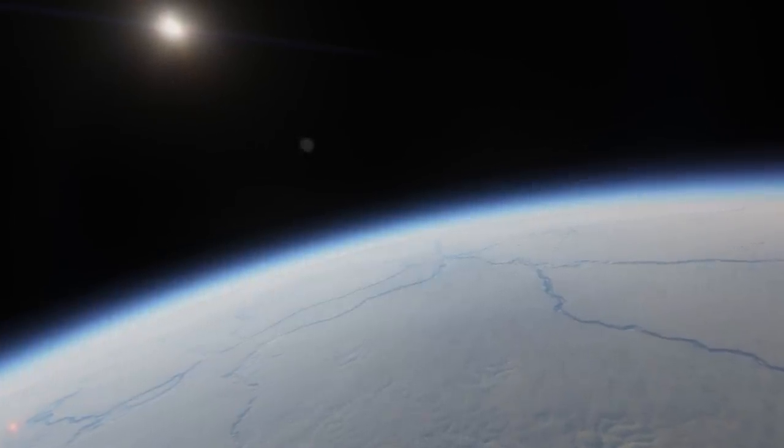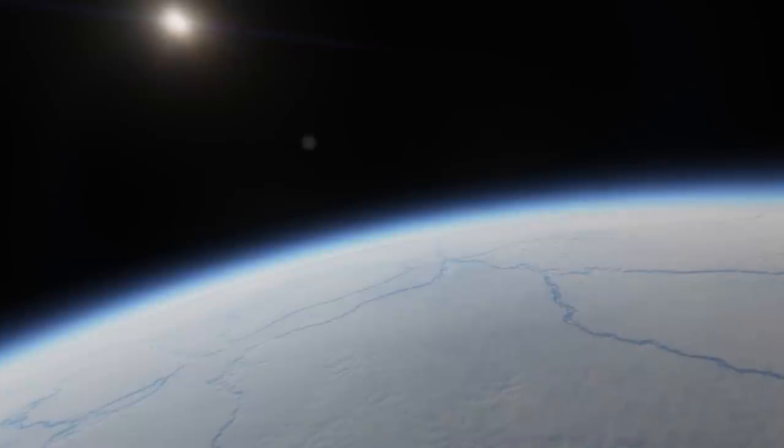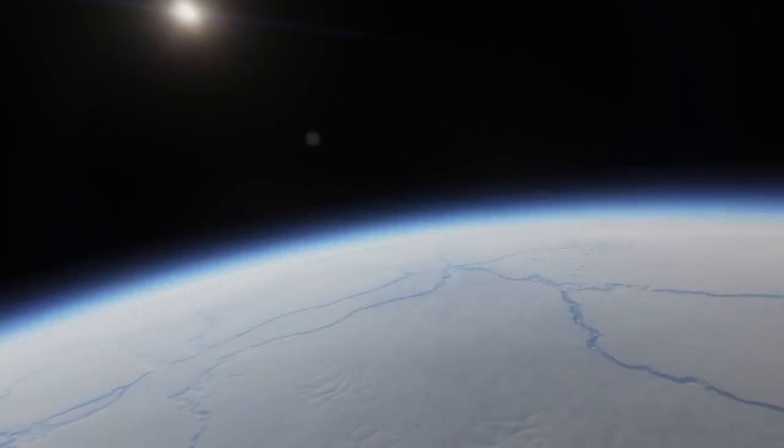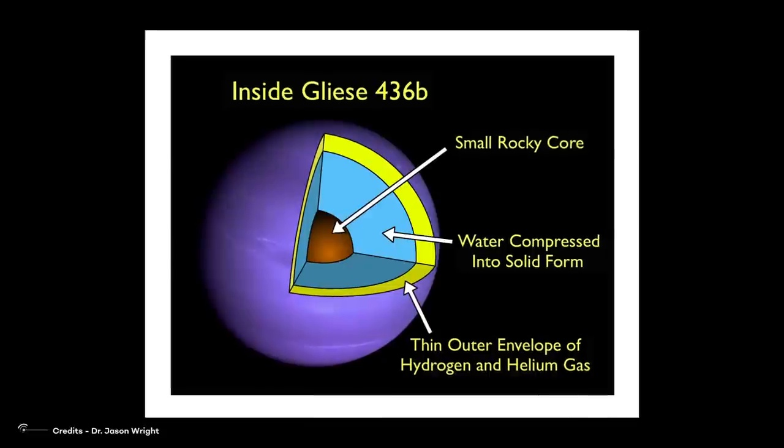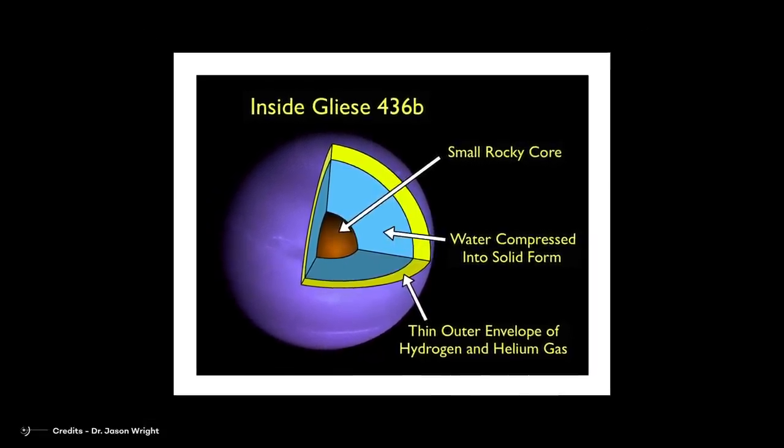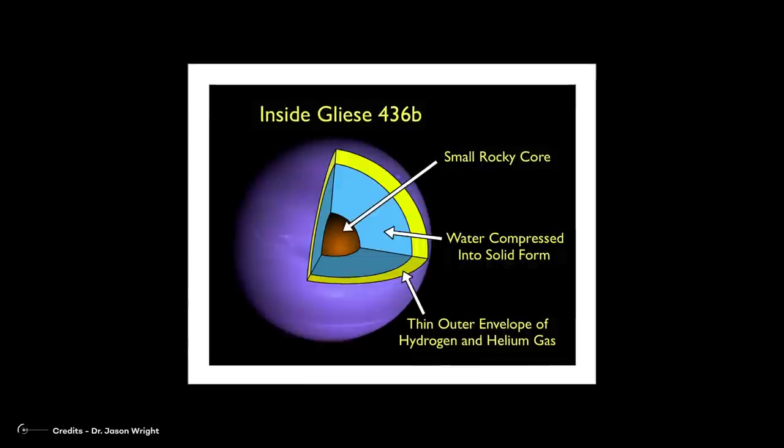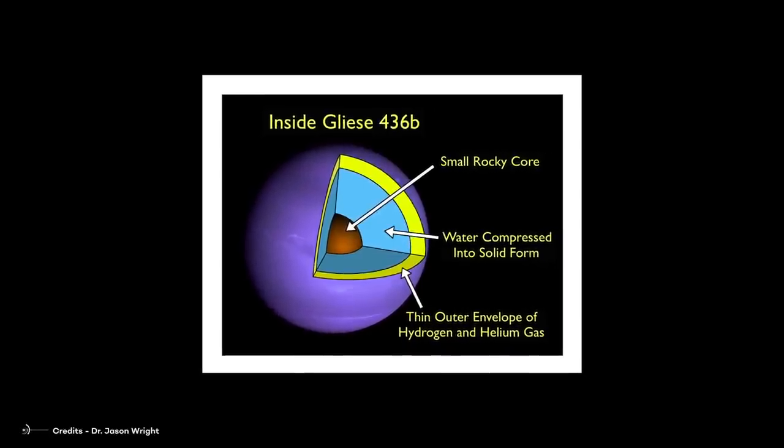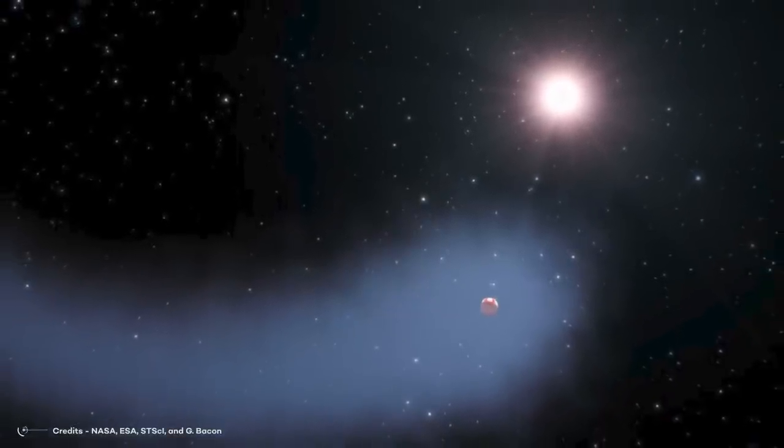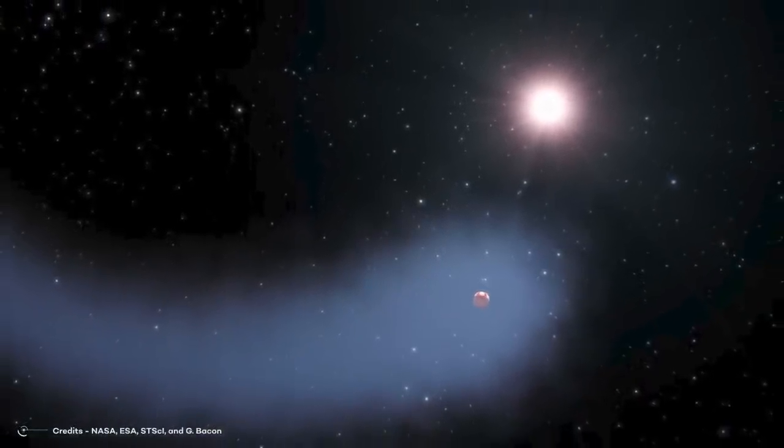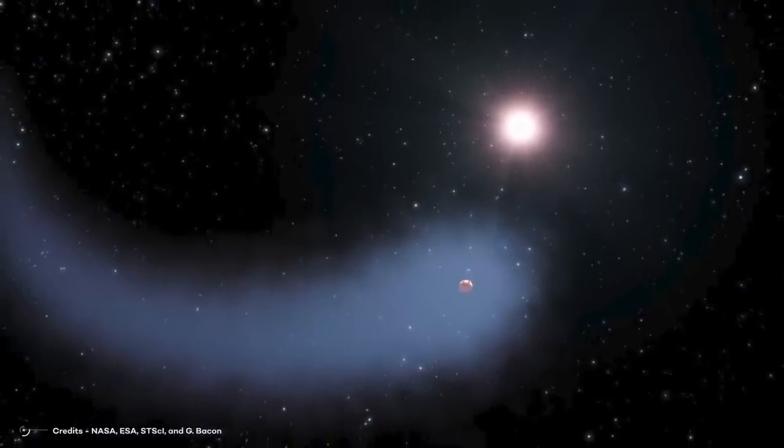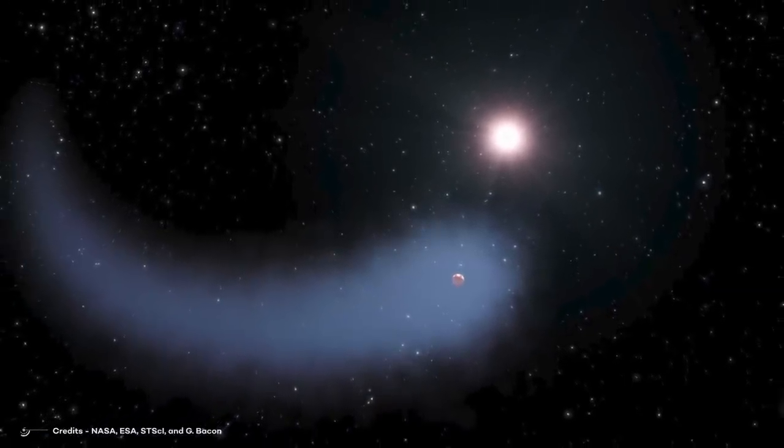However, the high pressure on the planet's surface compresses the water molecules and prevents them from turning into gas, even at very high temperatures. The composition of Gliese 436 b's atmosphere is also unique, as it contains a significant amount of hydrogen and helium in addition to water. This is thought to be due to the planet's formation, which may have involved the process known as accretion, in which it grew from a cloud of gas and dust that surrounded its host star.